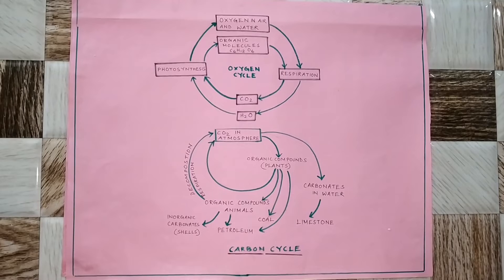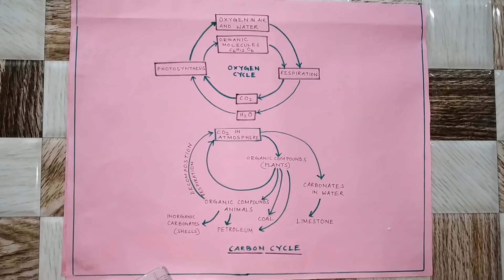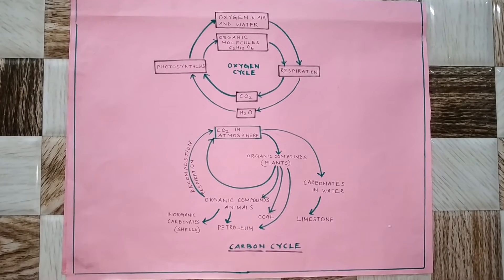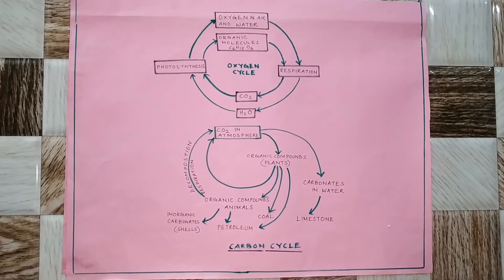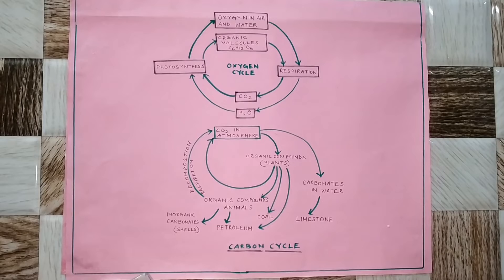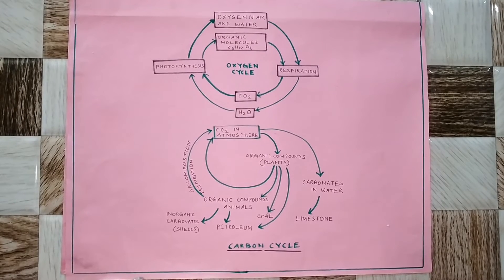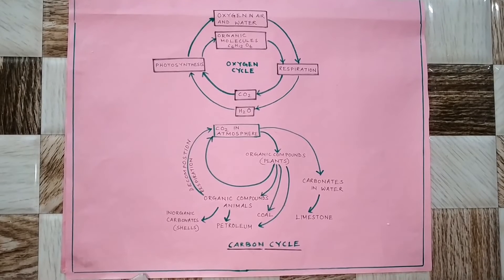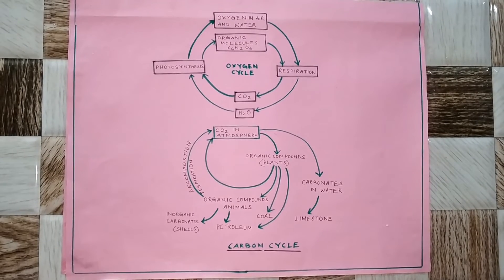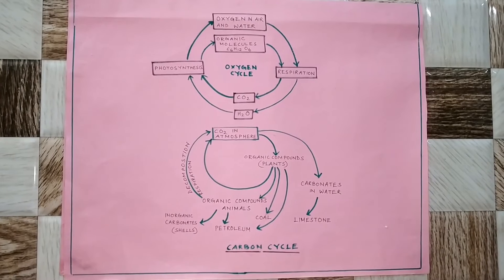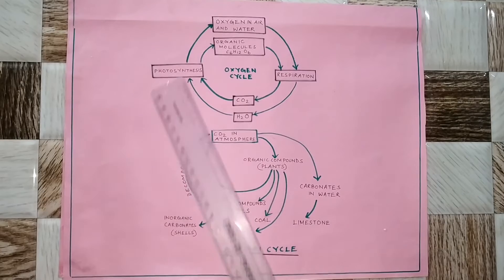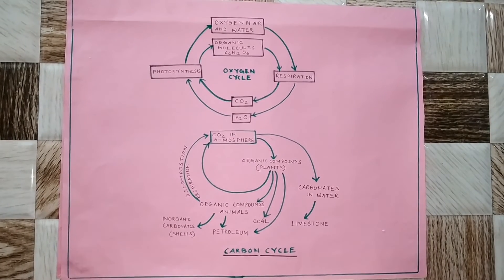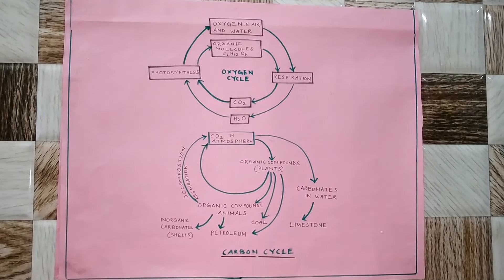During photosynthesis, plants take carbon dioxide from the air and water from the soil. With the help of sunlight and chlorophyll, they produce the glucose molecule — that is known as photosynthesis. When they produce the glucose molecule, they also produce oxygen. So oxygen enters the atmosphere by just one process, but is used up by three processes.